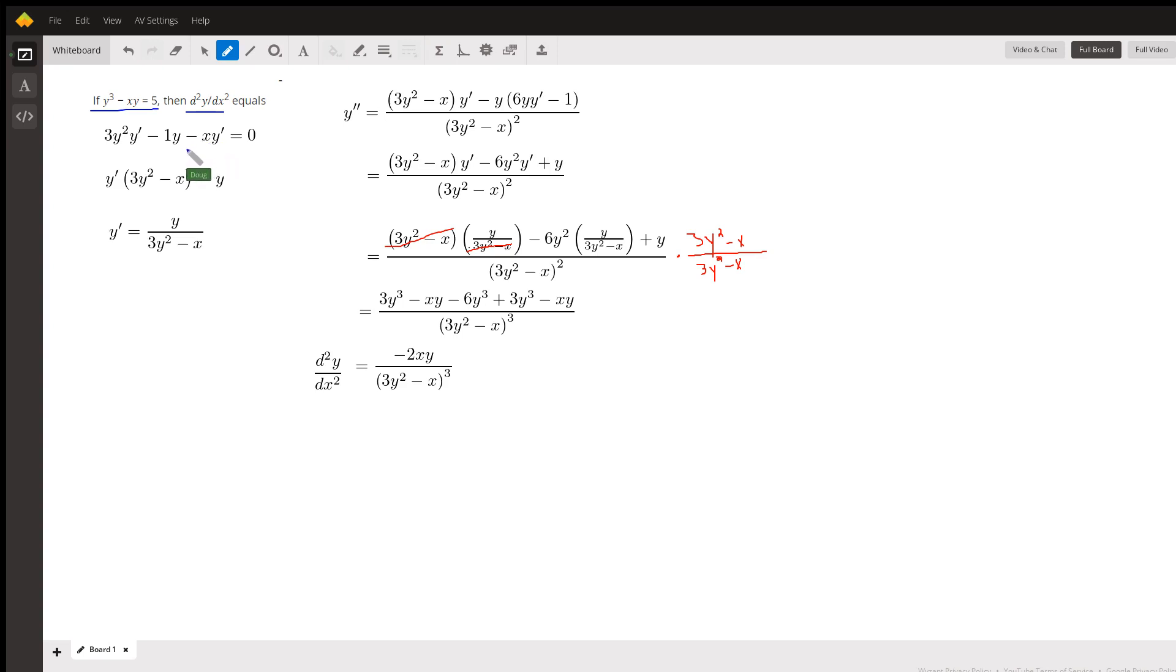The derivative of the first, I mean the first is minus x and the derivative of the constant is zero. So from these two terms we'll factor out a y prime and we'll transpose the minus 1y to the right side of the equal sign. And then we'll divide by the coefficient of y prime. There's the first derivative.